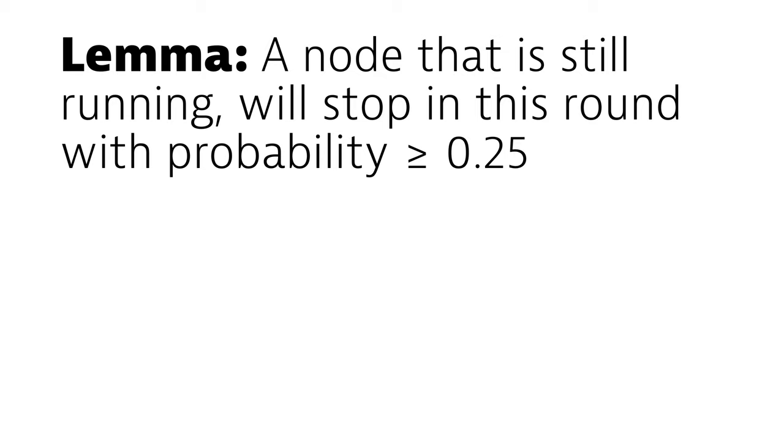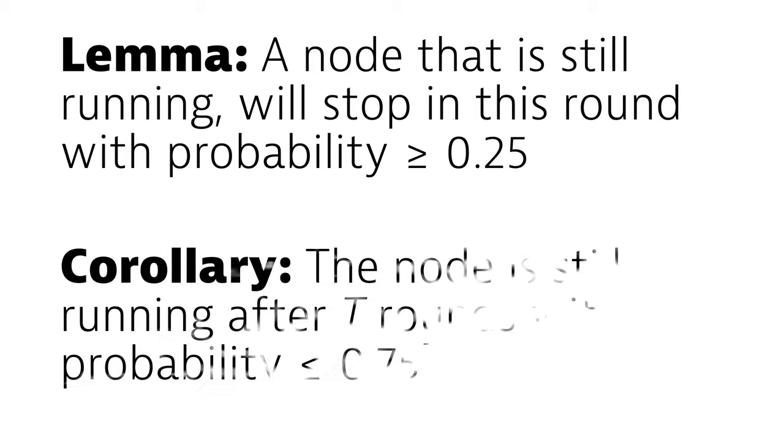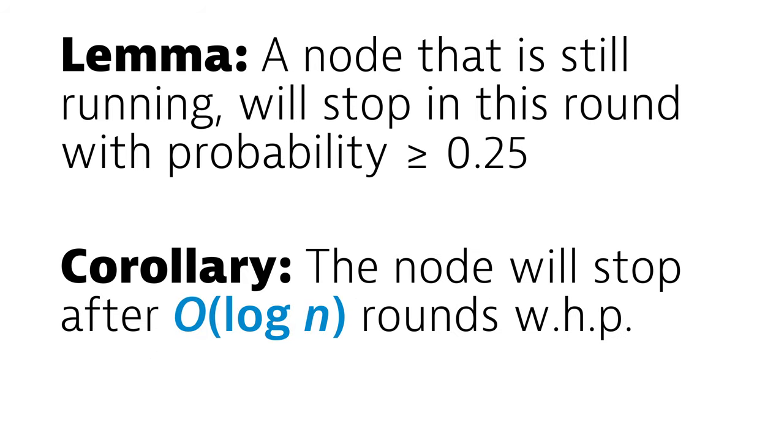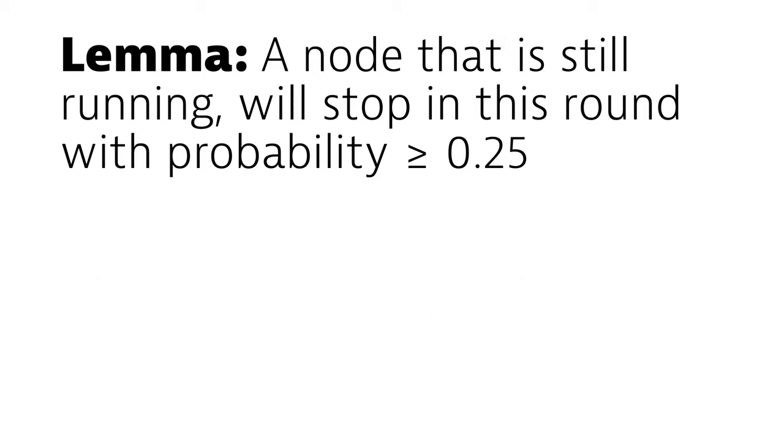And this means that the probability that a given node is still running after t rounds gets exponentially small. And then it isn't hard to say that after only a logarithmic number of rounds with high probability not only this node, but also all other nodes have stopped. So the interesting part is this lemma. How to prove it? Well, let's imagine I'm a node somewhere in the middle of the graph.